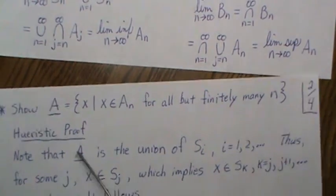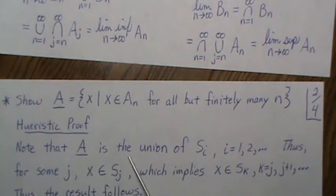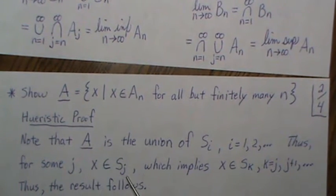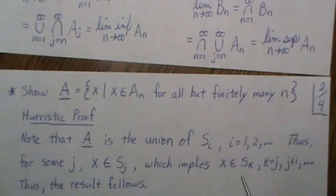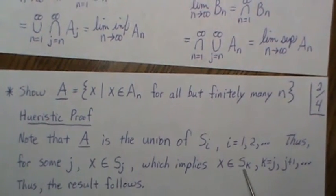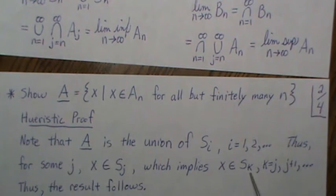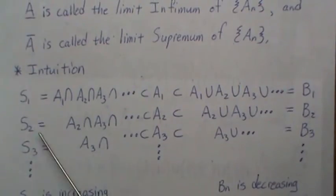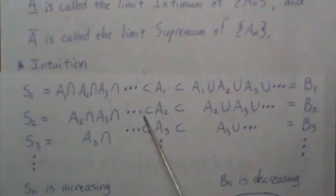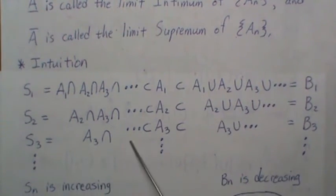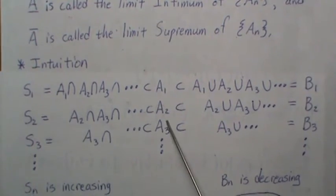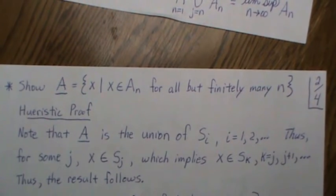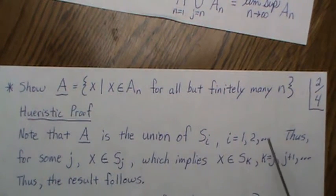The limit infimum is the union of the S_i's, so for some j, x is in S_j, which implies x is in all the subsequent S's. If x is in S_2 — meaning it's in all of A_2, A_3, ... — then it must be in S_3 as well, since we've just dropped A_1 from the intersection and x is already in all those sets. Thus x is in all but finitely many of the A_n's.